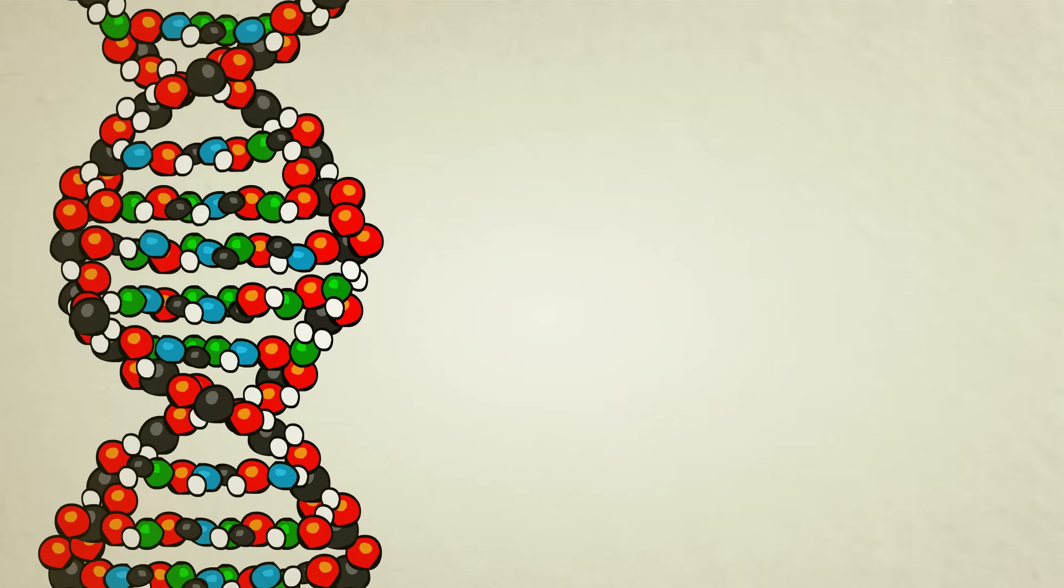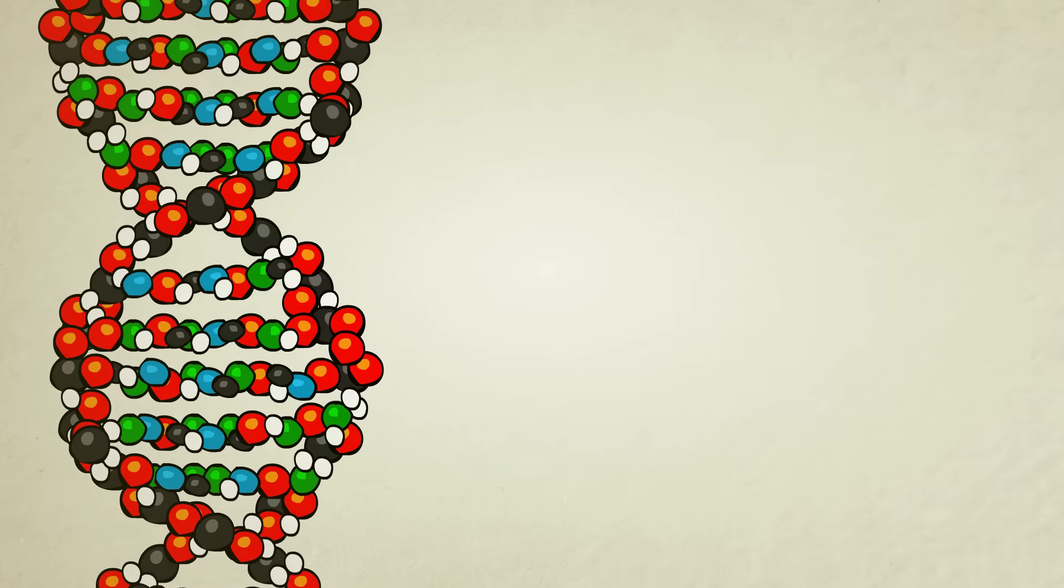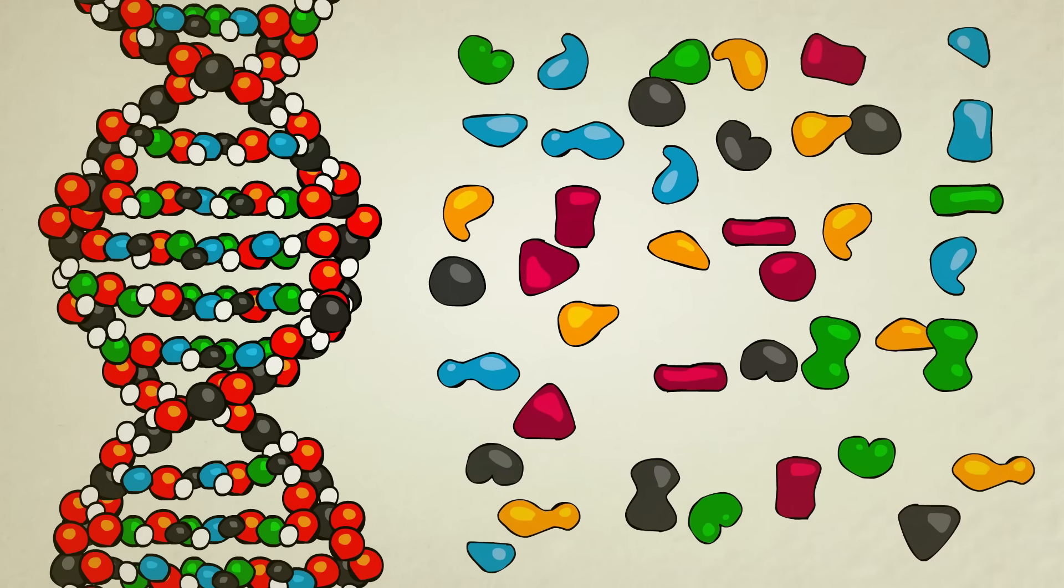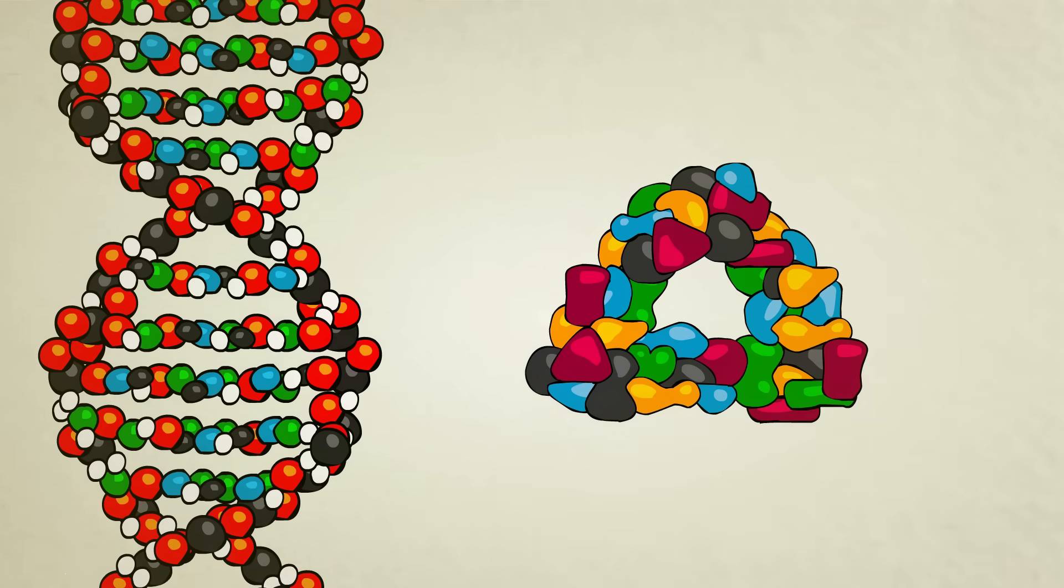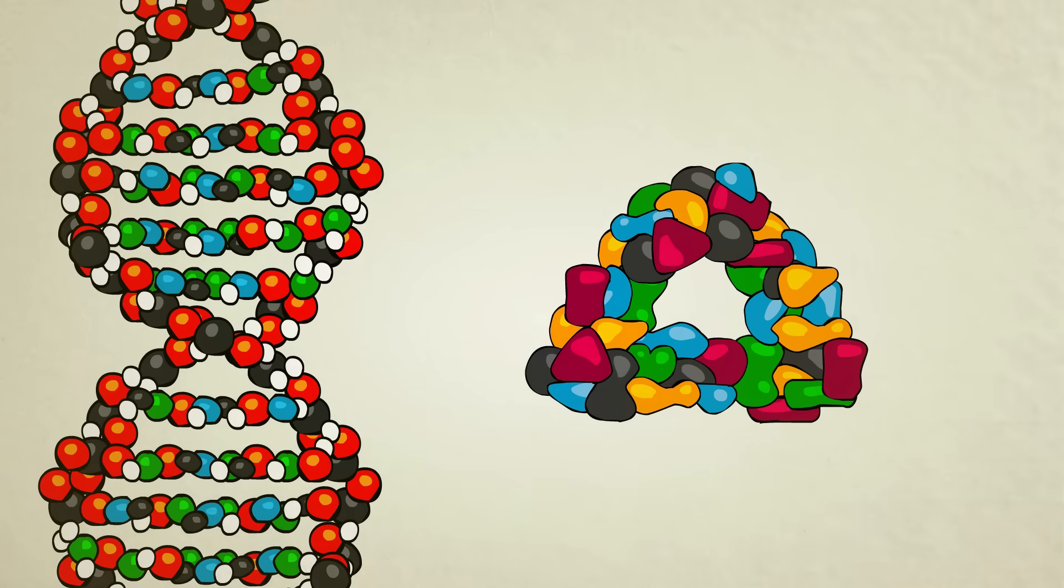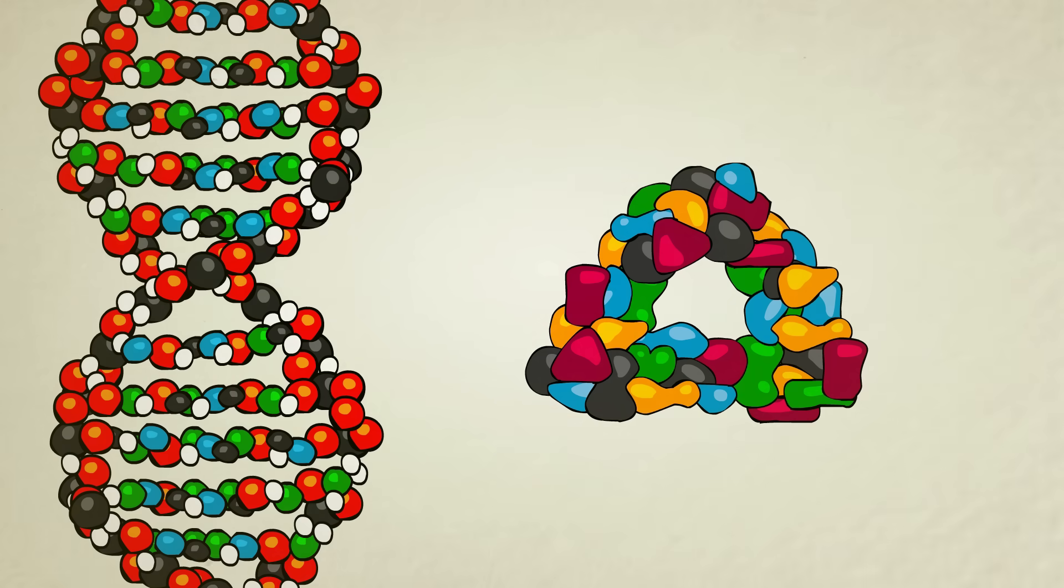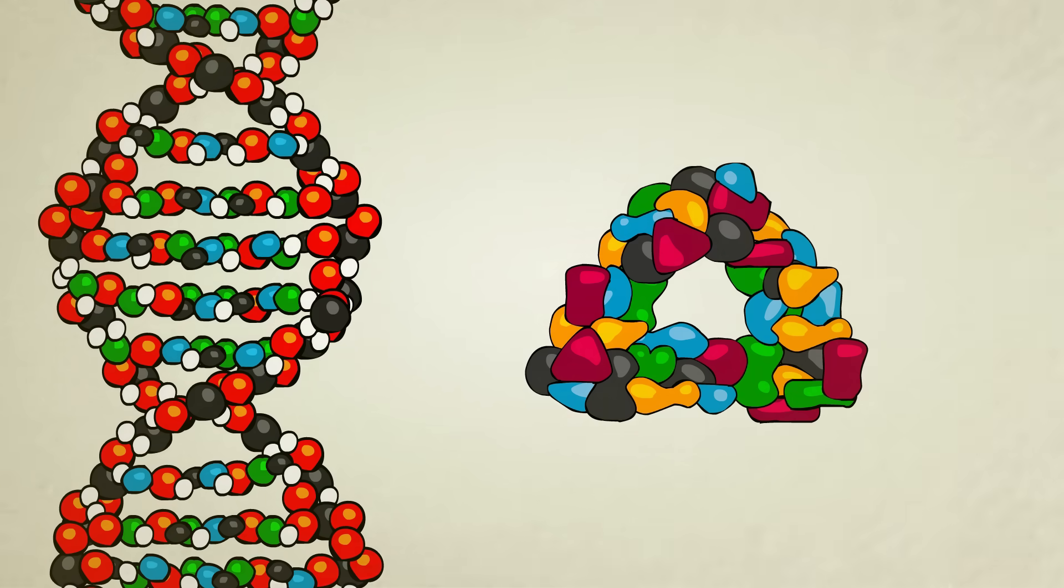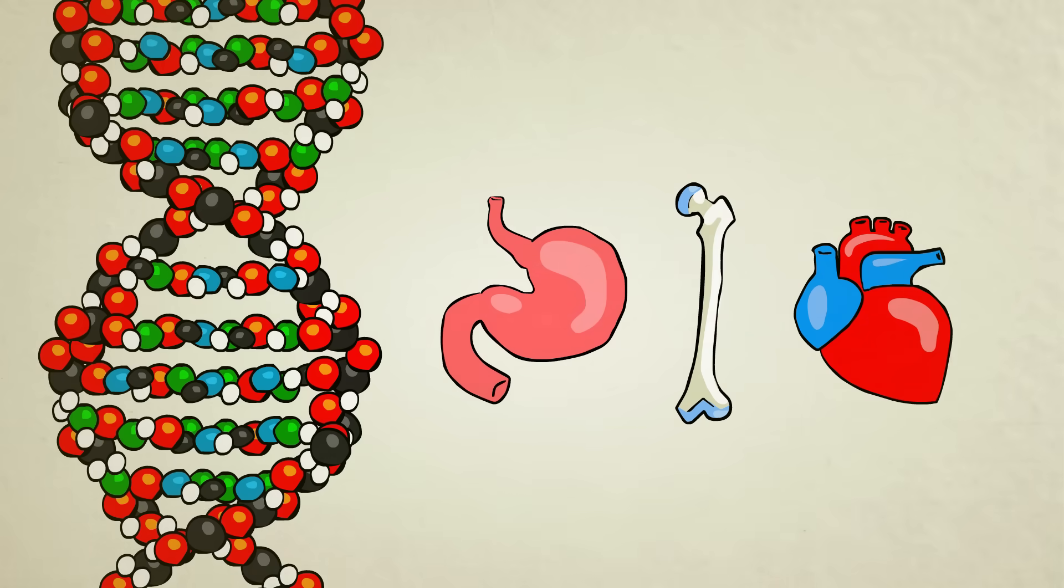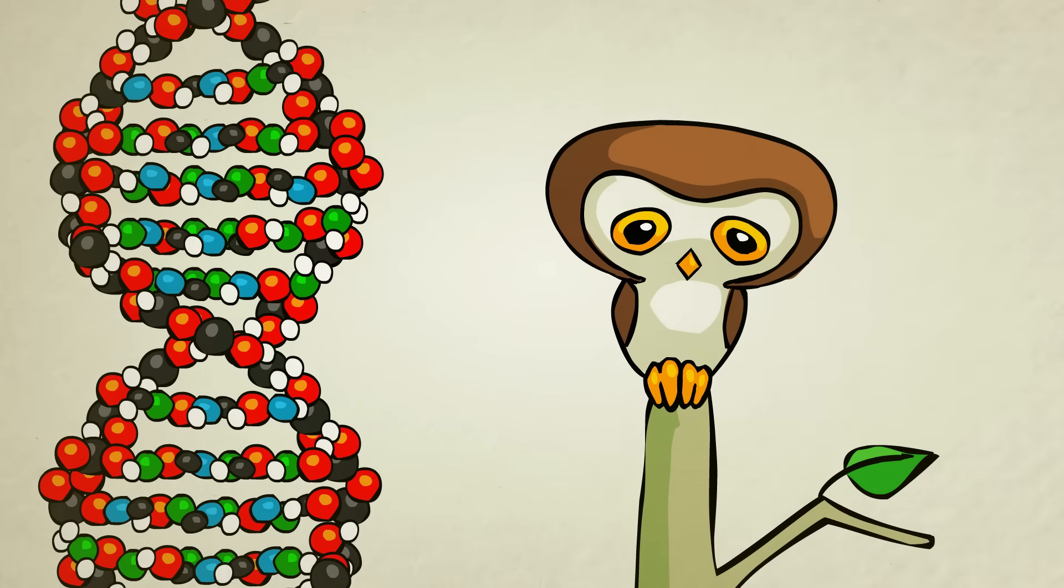DNA does a lot of interesting things, some of which we don't fully understand, but one of its main and most well understood functions is to tell amino acids how to line up and form themselves into the perfect protein shapes. In theory, if the right proteins are built at the right time and in the right place, everything else from cells to organs to entire creatures will come out just fine.